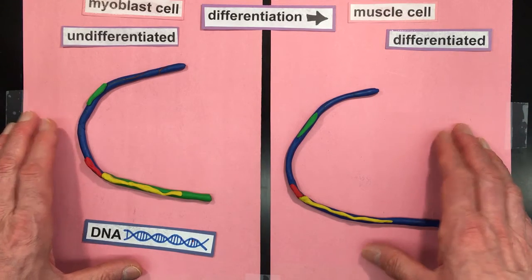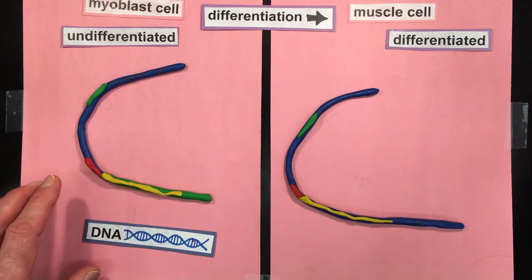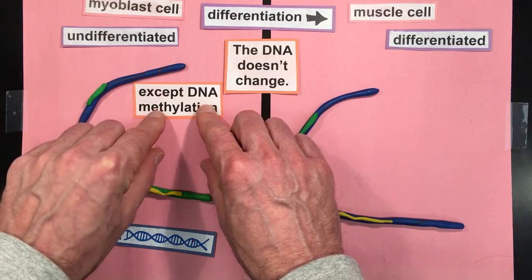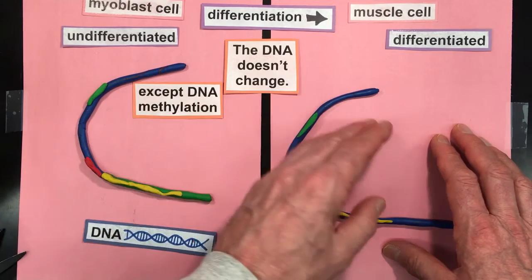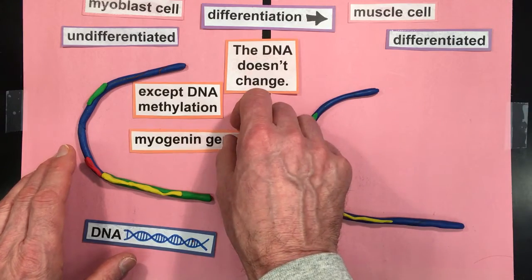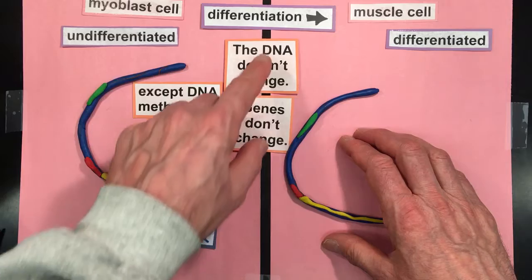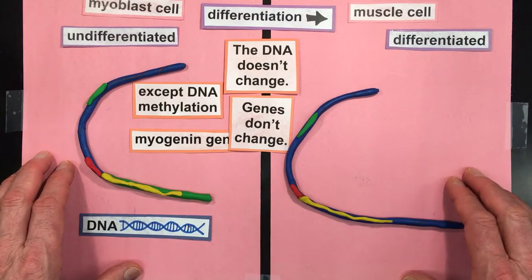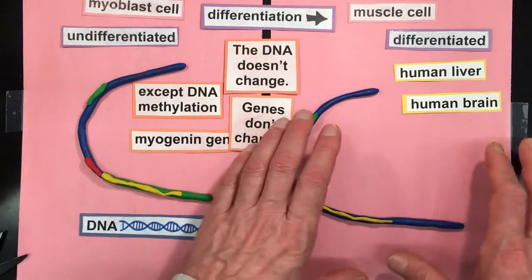The most important concept I'm teaching here is already shown: during cell differentiation in general, the DNA doesn't change. There's one important exception called DNA methylation, covered in an optional video, but the DNA sequence doesn't change. The AGCT letters stay the same as muscle cells differentiate. We're going to be studying an important gene essential for muscle differentiation called the myogenin gene — and the myogenin gene doesn't change. Genes are made of DNA; the DNA sequence doesn't change. This is true for cell differentiation in general.